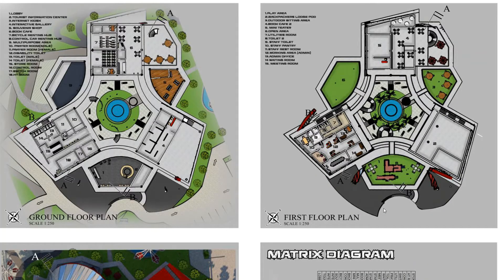Moving on to the ground floor plan, I've listed the spaces which are: lobby, tourist information centre, kiosk, internet kiosk, interactive galleries, souvenir shop, book café, bicycle renting hub, control renting hub, multi-purpose hall, prayer room, disability toilet, toilet for male and female, storeroom, and services including control room, switch room, and HD room.